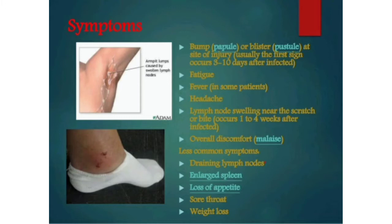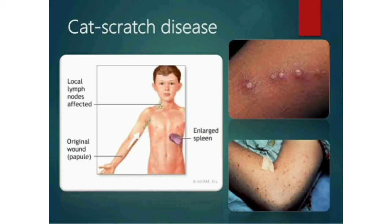Overall you get discomfort, that is malaise. Less common symptoms include draining lymph nodes, enlarged spleen, loss of appetite, sore throat, and weight loss. Looking at this picture of cat scratch disease: on the left side you can see local lymph nodes are affected from the original wound, with papules at the wound site. The spleen may also enlarge, and you can see pustules at the scratch site plus small reddish, petechia-like rashes.